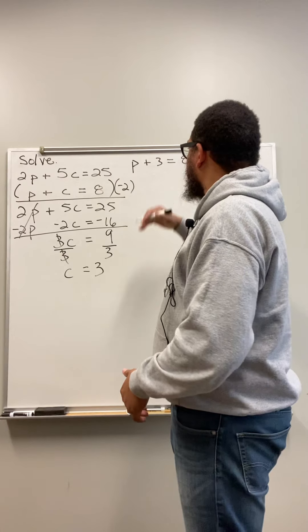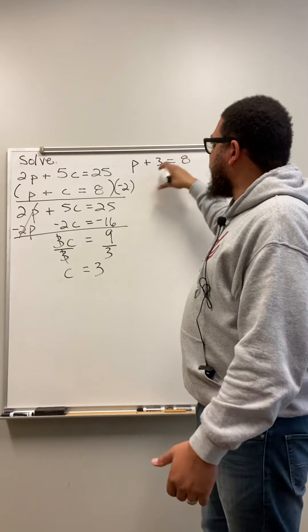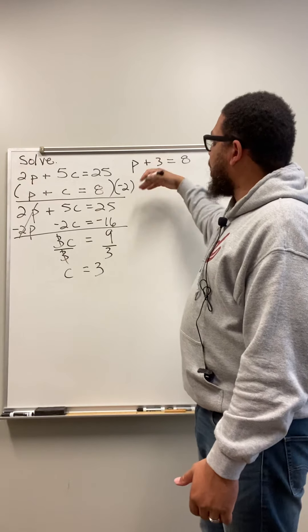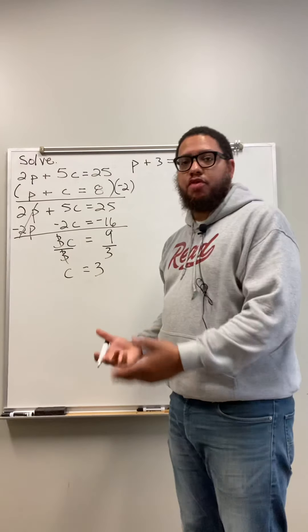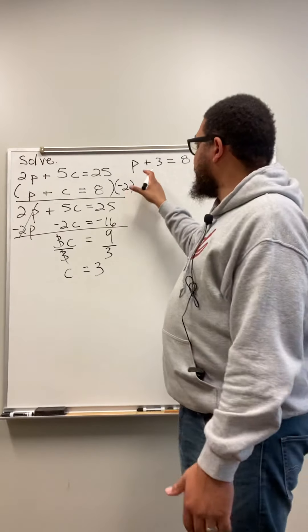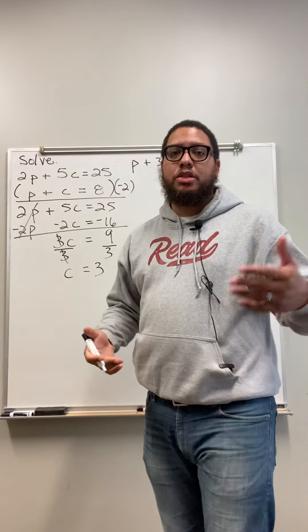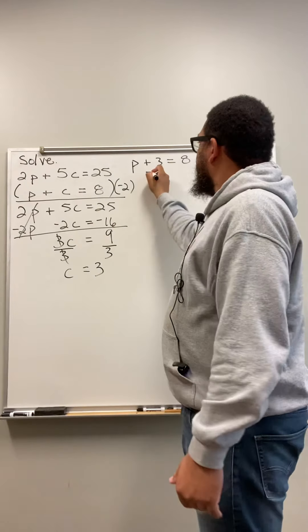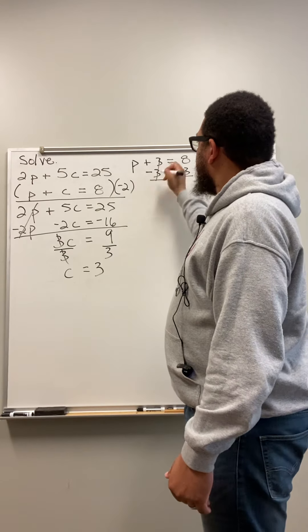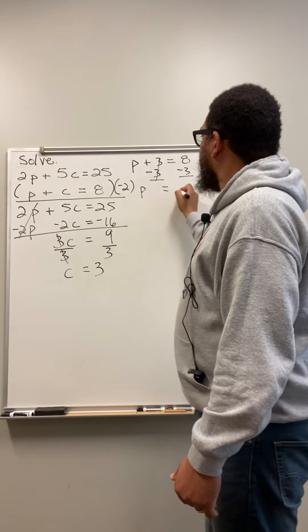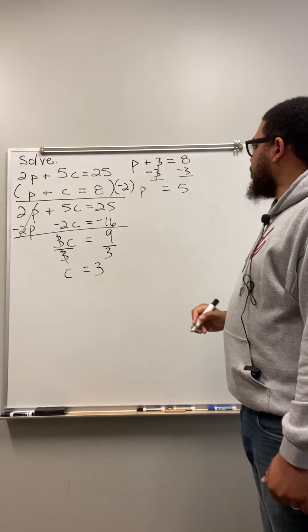So now I got P plus 3 equals 8. I'm trying to solve for P. So I'm trying to isolate P. So I got to get rid of this 3. This 3 has got to go. How do I get rid of it? I do the opposite operation from what the 3 is involved in right now. This 3 is involved in addition. The opposite of adding 3 is subtracting 3. So I do minus 3 right here. And I do minus 3 right here. That cancels out. Now I got P is equal to 5. So P is equal to 5.